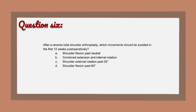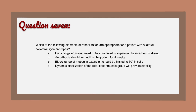Question 6: After a reverse total shoulder arthroplasty, which movements should be avoided in the first 12 weeks post-operatively? A) Shoulder flexion past neutral, B) Combined extension and internal rotation, C) Shoulder external rotation past 20 degrees, D) Shoulder flexion past 60 degrees.